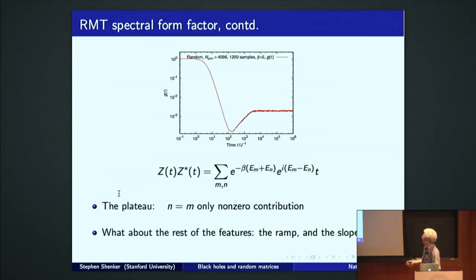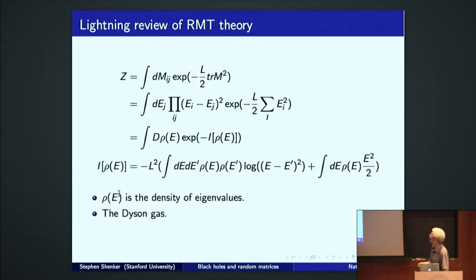We now can understand what those features mean because we can understand them certainly in this model. So now, let me tell you what they mean in random matrix theory.